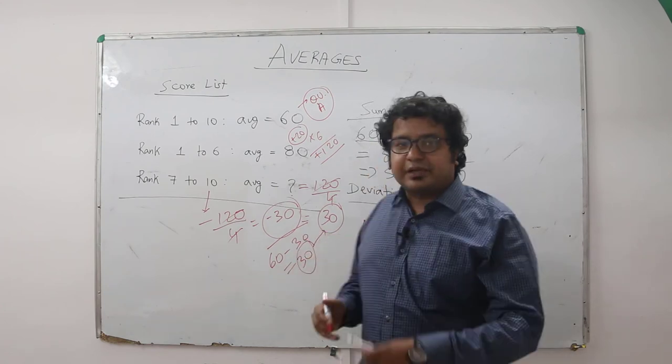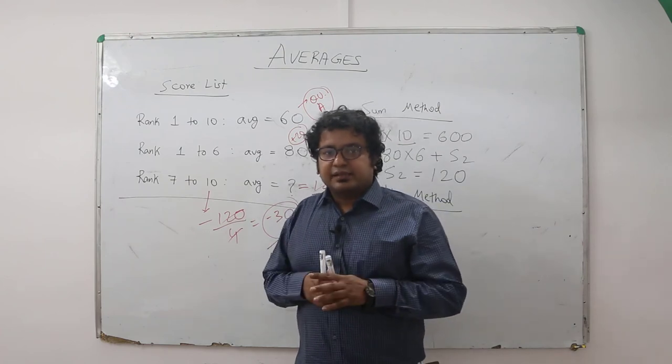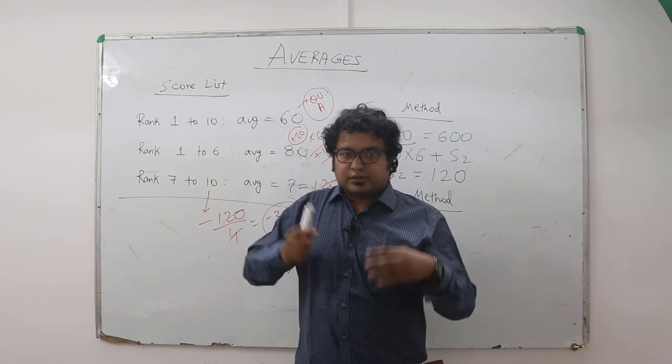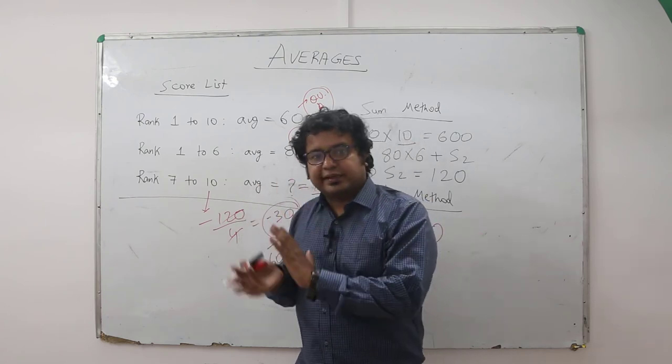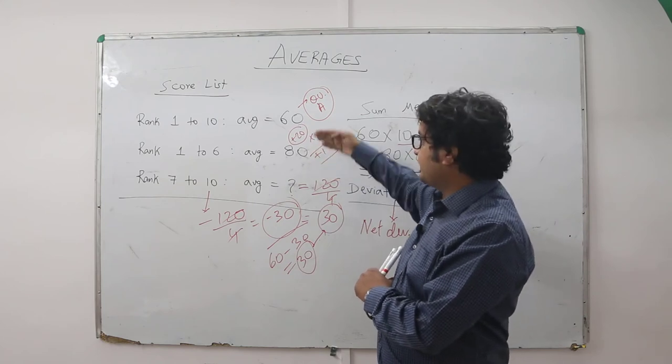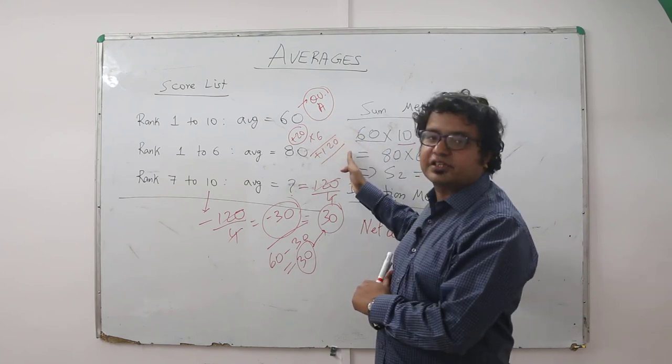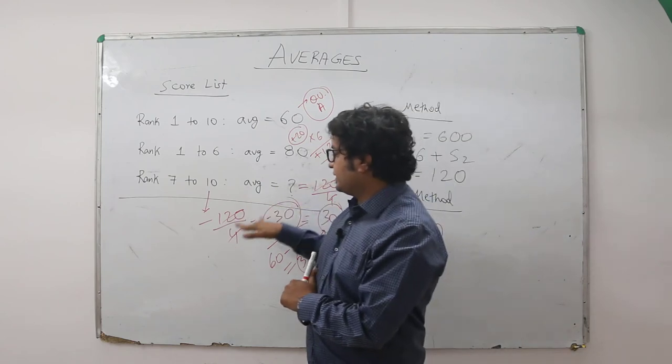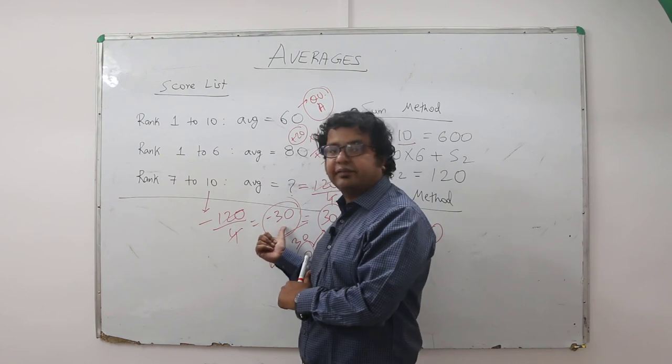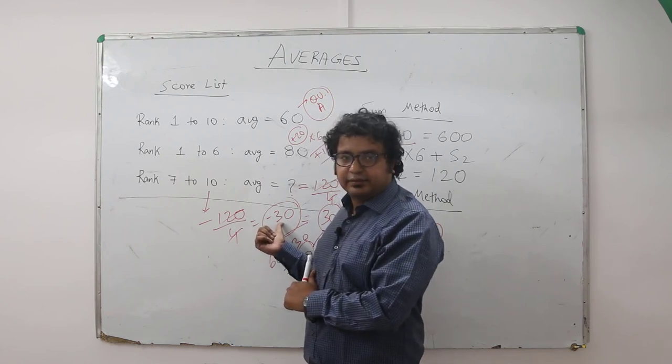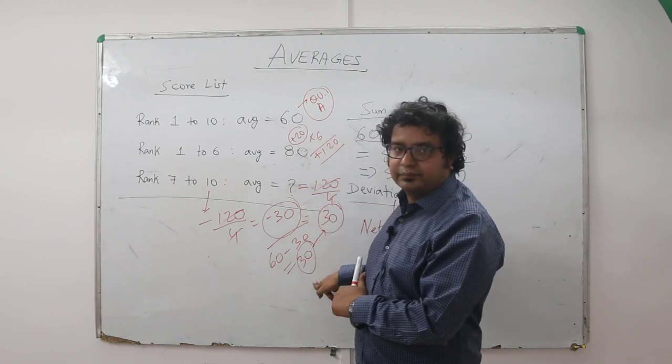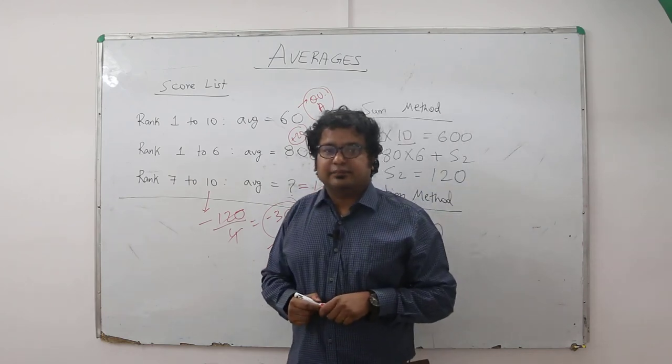You get the same answer. Let me explain once again. Remember this: net deviation from overall average is always 0. So whatever positive deviation, the same amount will be the negative deviation. So if you see the first 6 values, 20 per head into 6, the positive deviation is 120, which means for the remaining, the negative deviation will be 120. Since there are 4 people, it means per head negative deviation is 30. So minus 30 out of the overall average, 60 minus 30 becomes 30. So that is the answer. I hope this is clear. Thank you.